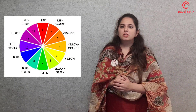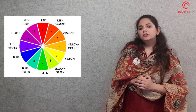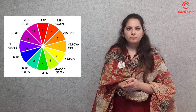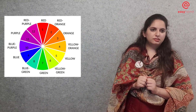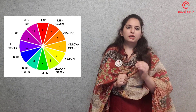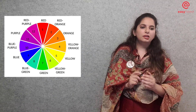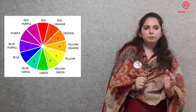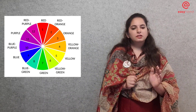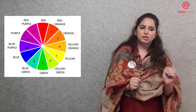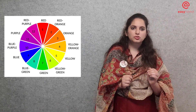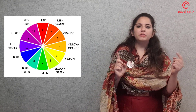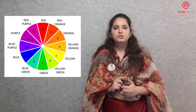The double split complementary color scheme consists of a set of four colors. For example, red and green are complementary colors. The colors next to red are red-purple and red-orange, whereas the colors next to green are blue-green and yellow-green. So red-purple, red-orange, yellow-green, and blue-green together make up the double split complementary colors.